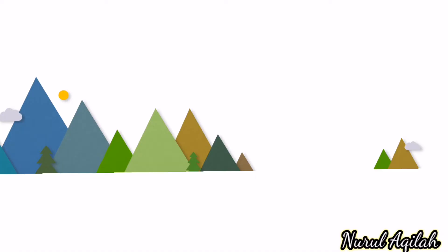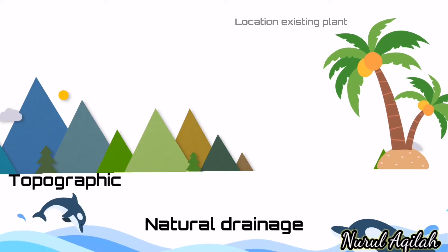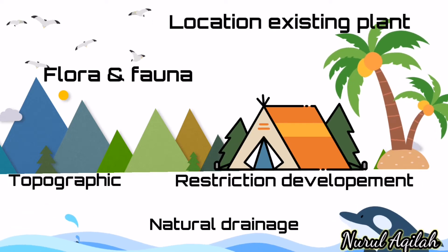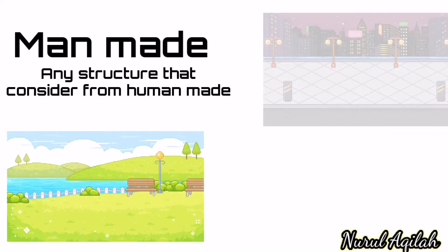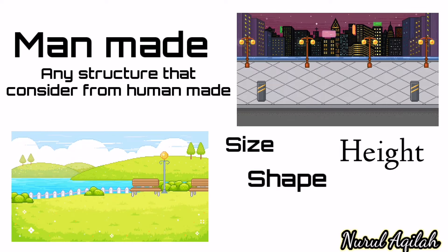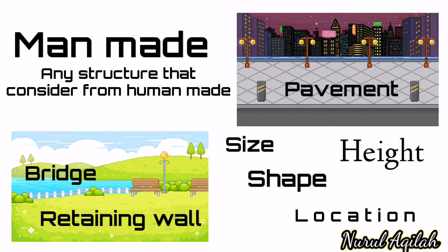Natural features include topography, natural drainage, existing plants, development restrictions, and flora and fauna. Any structures surrounding the area other than buildings are considered man-made features. In this topic, you must study the size, shape, height, and location of elements such as retaining walls, bridges, pavements, and others. This will help you design a building that suits the surrounding environment.